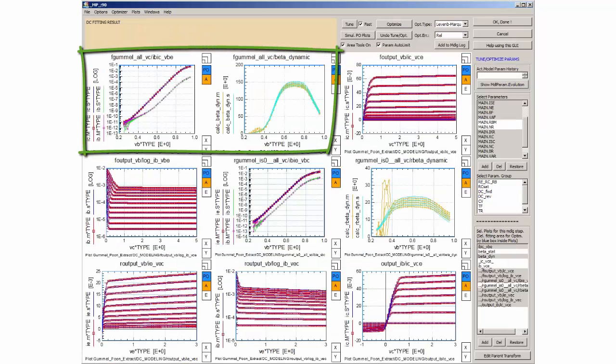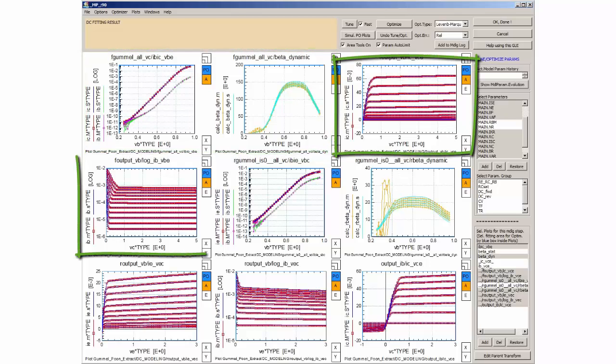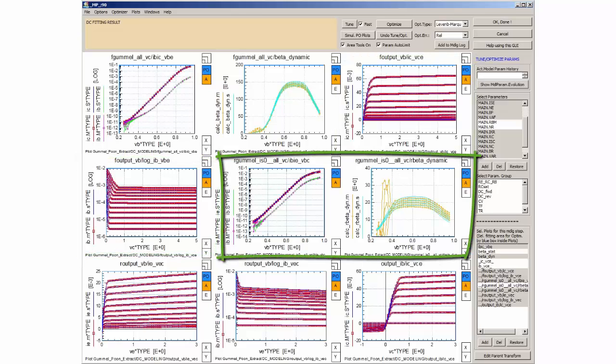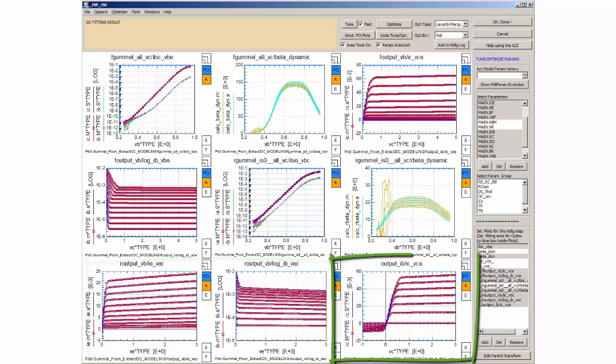This ends the DC fitting. We have achieved a good fit in the forward Gummel plot and the beta, the forward input and output characteristics, the reverse Gummel plots and beta, the reverse input and output characteristics, and the output characteristic with forced base current.